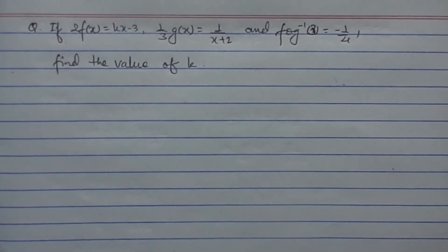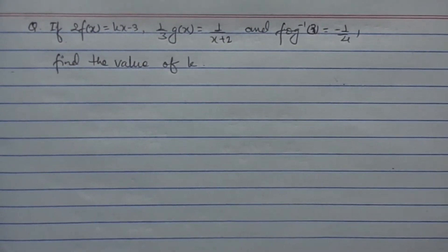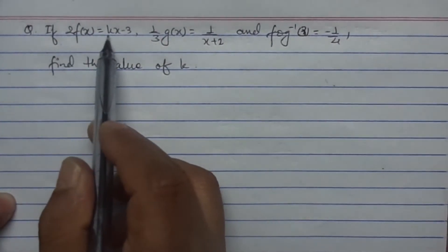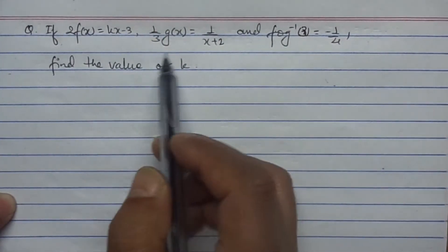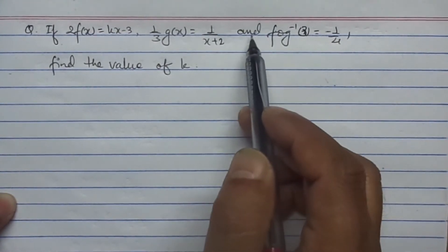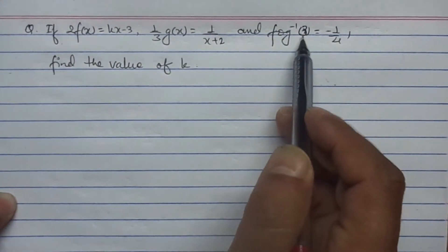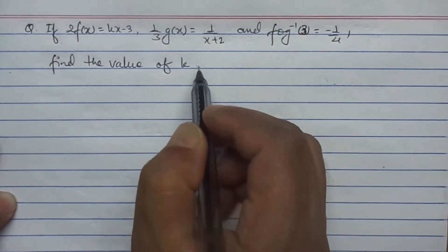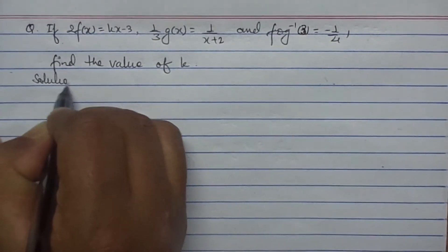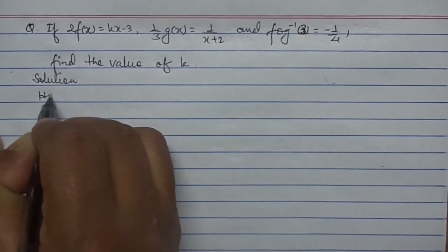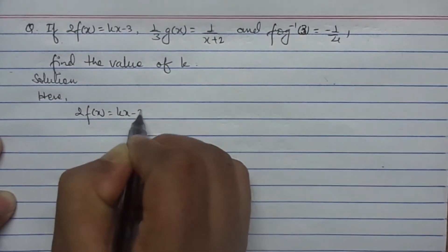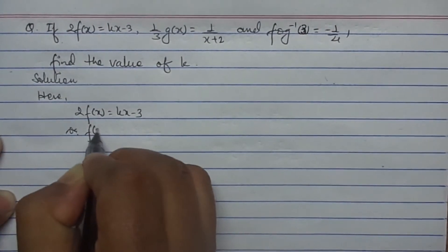This question is related to relations and functions, and it is based on the composite function involving inverse. The given question is: if 2f(x) equals kx minus 3, (1/3)g(x) equals 1 upon x plus 2, and fog⁻¹(3) equals minus 1 upon 4, then find the value of k. Solution: 2f(x) equals kx minus 3, and we need to find the exact function f(x).